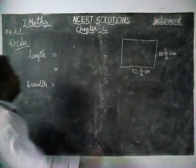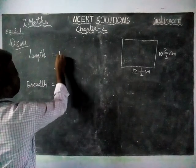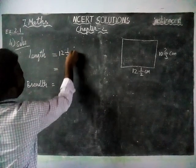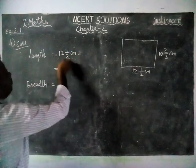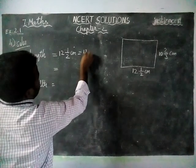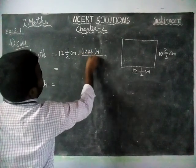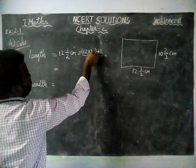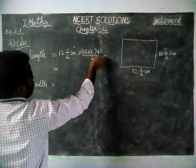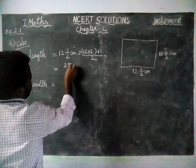So length is given as 12 and 1/2 centimeter. We have to convert into improper fraction, so 12 into 2 plus 1 divided by 2. 12 2s are 24, 24 plus 1 is equal to 25 divided by 2 centimeter.